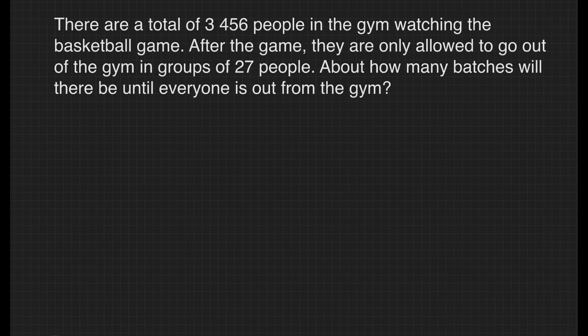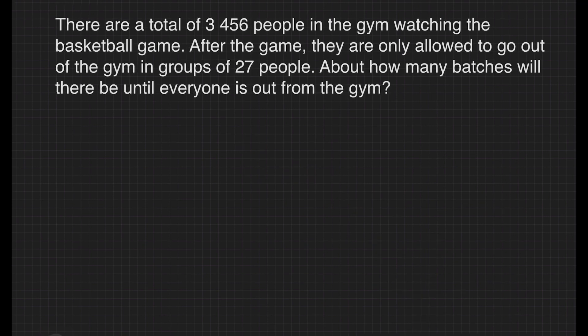We have another example here. There are a total of 3,456 people in the gym watching the basketball game. After the game, they are only allowed to go out of the gym in groups of 27 people. About how many batches will there be until everyone is out from the gym? First, let's write our division sentence: 3,456 divided by 27 equals blank.